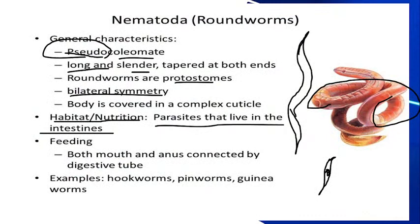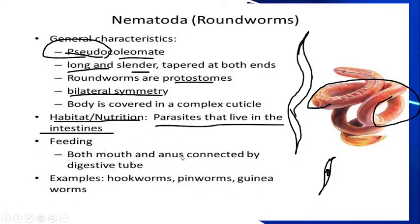Humans can be the host, as can other animals and plants. Regarding feeding, they have both a mouth and an anus connected by a digestive tube — that is why they are protostomes, where the mouth develops first and then the anus. If the anus develops first, they would be deuterostomes, as covered in previous classes.